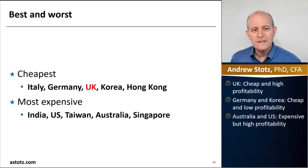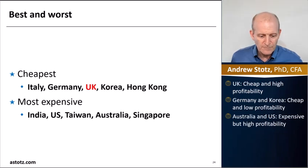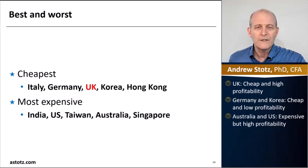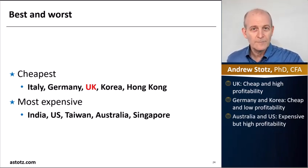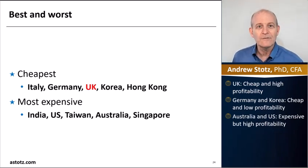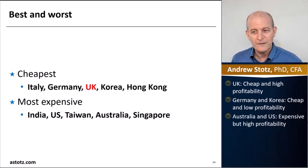Digging into countries, the cheapest are Italy, Germany, UK, Korea, and Hong Kong. The most expensive are India, U.S., Taiwan, Australia, and Singapore. Going back to the ones highlighted earlier: the UK is cheap and highly profitable — it's the only country that meets both criteria. Germany and Korea are cheap but have low profitability, meaning they're cheap and they deserve it. Australia and the U.S. are expensive but have high profitability — they have earned their high multiple.